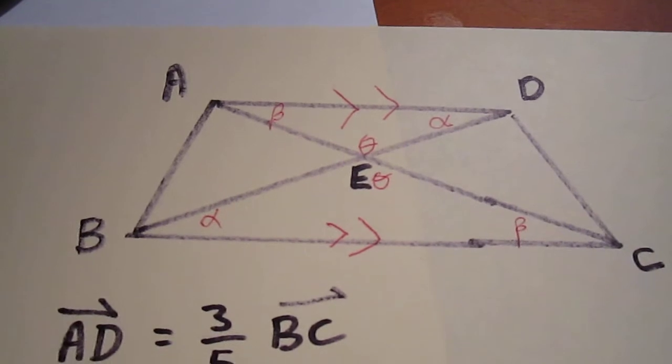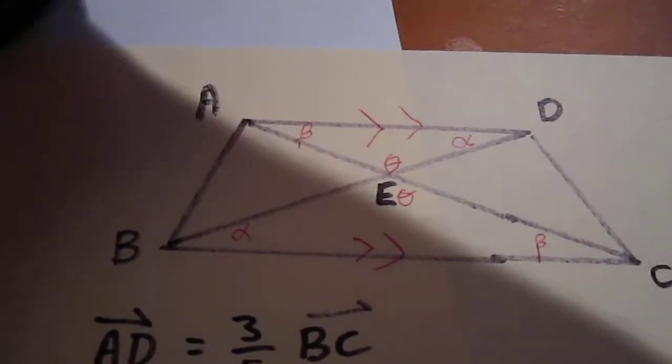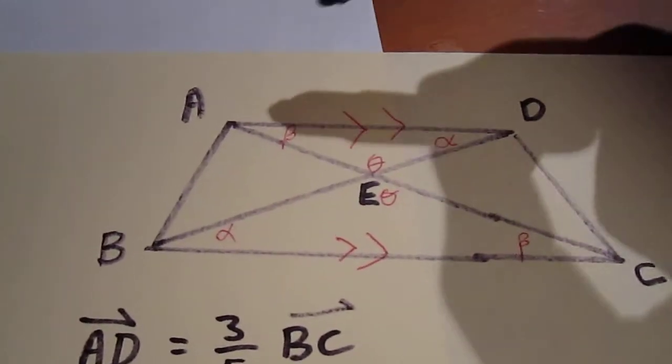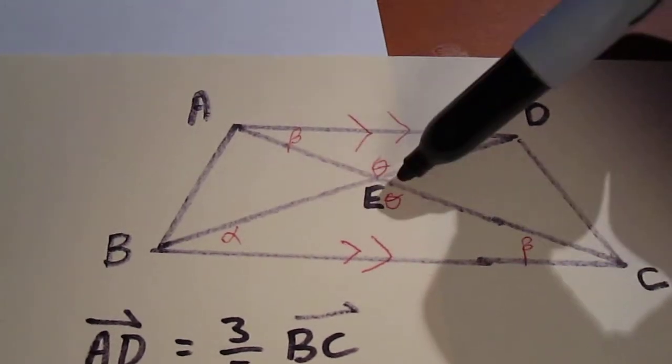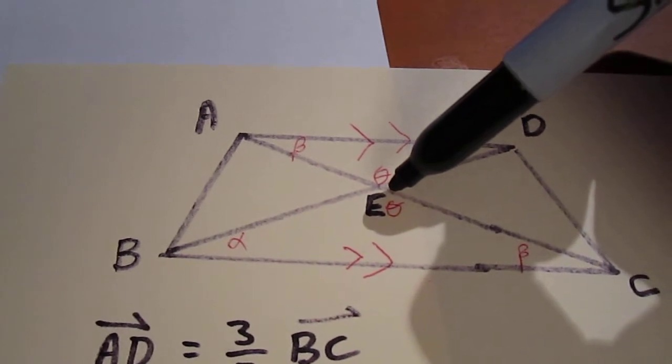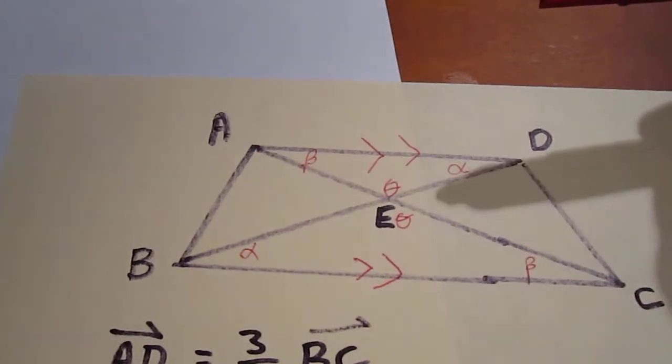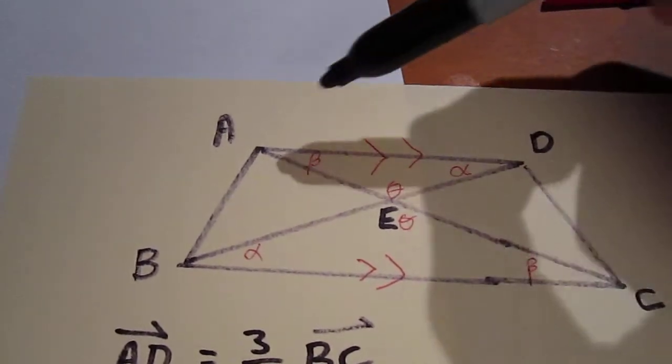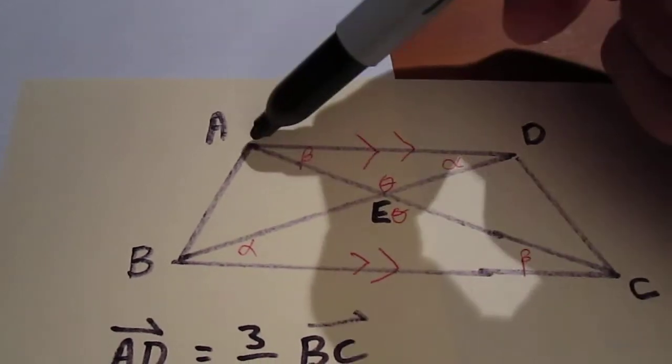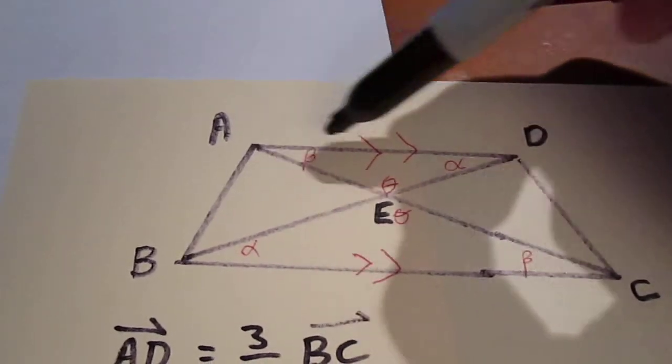So what we have are similar triangles. Now, we're asked to show that this vector here, AE, is equal to a linear combination of AD and AB. To reorder them, we're asked to show that the vector in this direction is a linear combination of a vector in this direction and a vector in this direction.